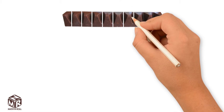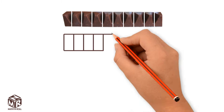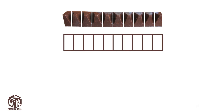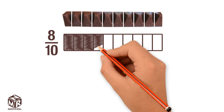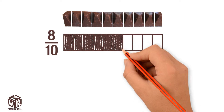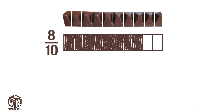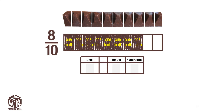Let's say we have a chocolate bar. We divide the chocolate bar into 10 parts. Let's draw a model. Let's shade 8 tenths of the model. Each part represents 1 tenth. Use a place value chart to show 8 tenths as a decimal.